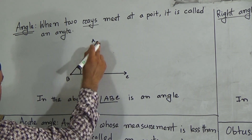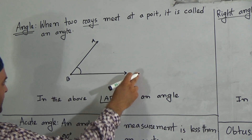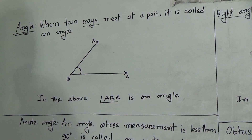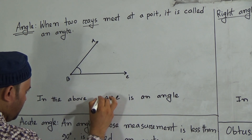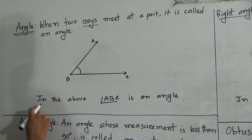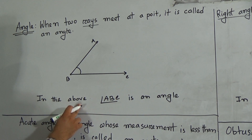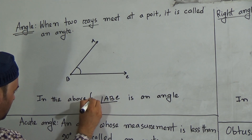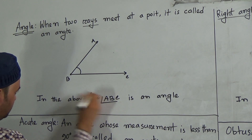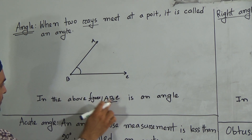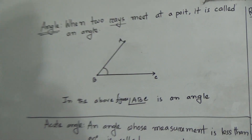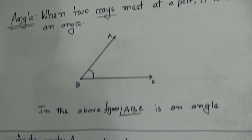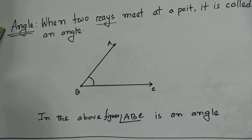Call this point A, this point B, and this point C. Then the angle ABC is an angle. In the above figure, ABC is an angle. My dear students, hope you understood the definition of angle.